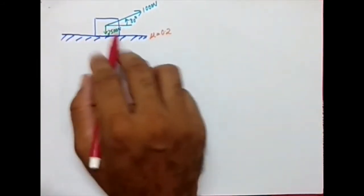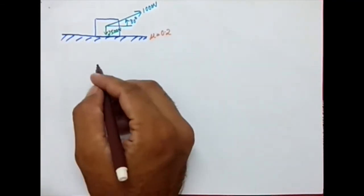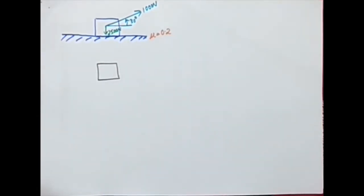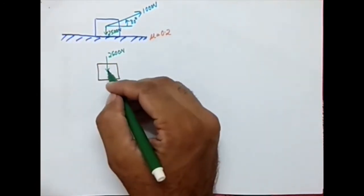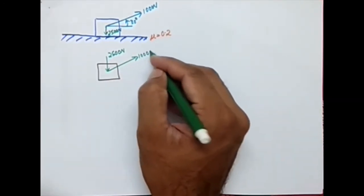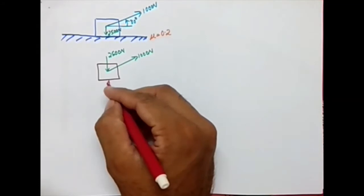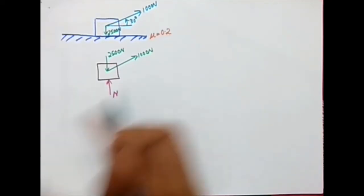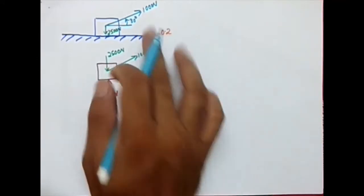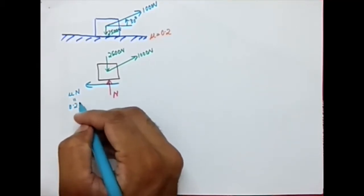If we plot the free body diagram of this block, we have the block with 2500 Newton acting downward, and 1000 Newton acting at an angle of 30 degrees. There is a normal reaction between the block and the ground. Since the block tends to move to the right due to the applied force, the frictional force acts in the opposite direction, equal to mu times N, which is 0.2 times N.